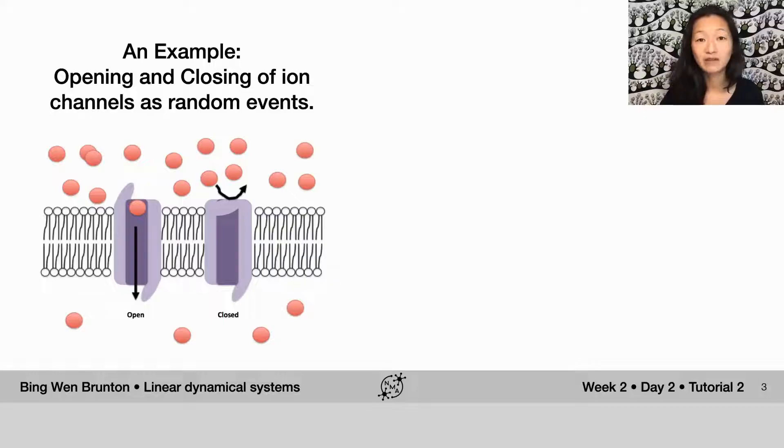I'm going to give you an example of a Markovian system, a really simple example, which is the opening and closing of ion channels. These ion channels, you can think of them as the things that turn on and off that underlie all neural processes.